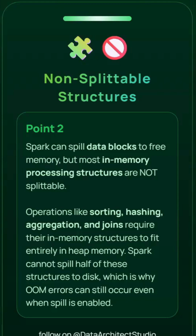The second reason is that data in Spark memory follows data structures, and most data structures are not splittable in nature. That means if you want to process any operation, the entire data structure must fit into memory — only then can it be processed. Otherwise it cannot be processed. These are the reasons why Spark can still give an out-of-memory exception even though it has an option to spill data to disk.